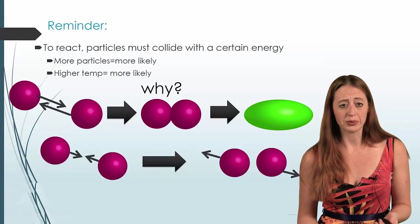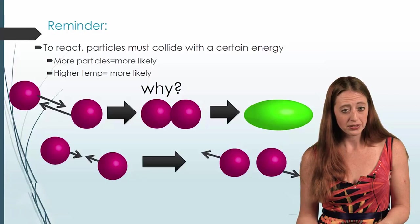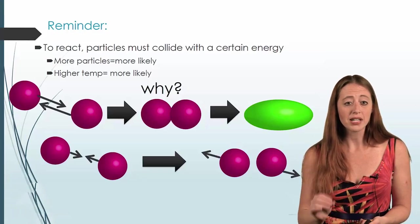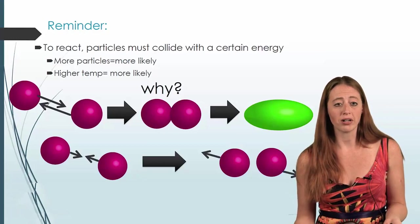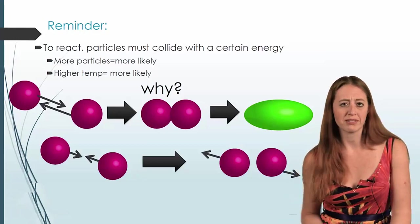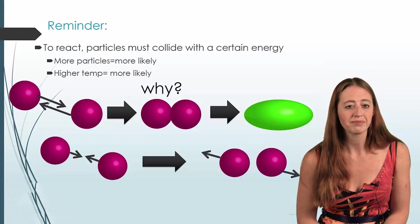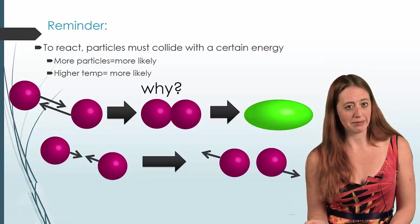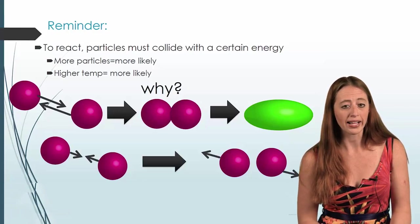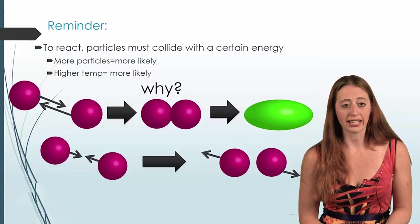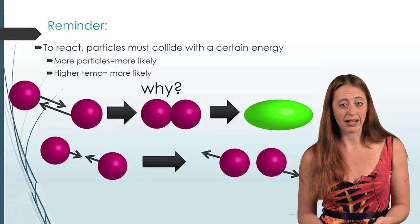I want to remind you that when molecules are reacting, they have to collide and must collide with a certain energy. We said more particles makes reactions more likely, and that part makes easy conceptual sense. Now I want to focus on the second part: higher temperatures make reactions more likely too, but why? Why is it more likely that things will collide at a higher energy if we have higher temperatures?